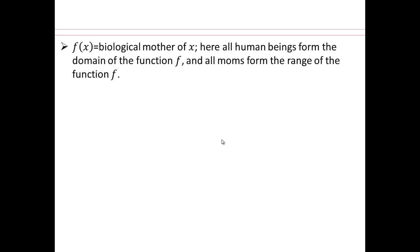So if f of x is the function that represents biological mother of x, here all human beings form the domain of the function and all moms form the range of the function. You note this is a function since every person has a unique biological mother. Also note that several siblings can have the same biological mother. It is okay to have many inputs giving you the same output. You just cannot have one input giving you multiple outputs for it to be a function. Just remember that.